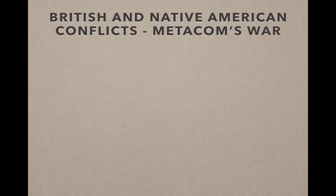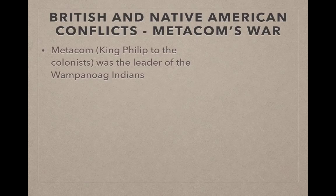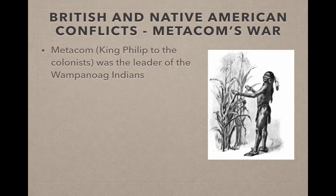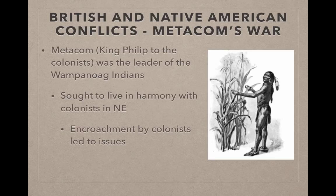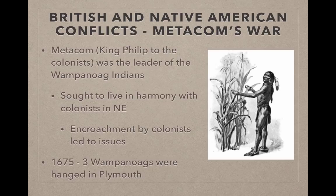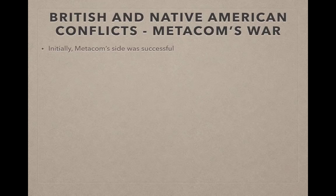Now let's jump over to Metacom's War. Metacom, better known as King Philip to the colonists, was the leader of the Wampanoag Indians. They had good relations with the colonists early on — the natives taught them how to farm and tried to live in harmony in New England. But over time, encroachment onto Native American land by the colonists led to issues, and in 1675 three Wampanoag Indians were hanged in Plymouth, which really starts Metacom's War. Initially Metacom and his side were successful, but the Iroquois Indians, a different tribe, gave aid to the colonists.